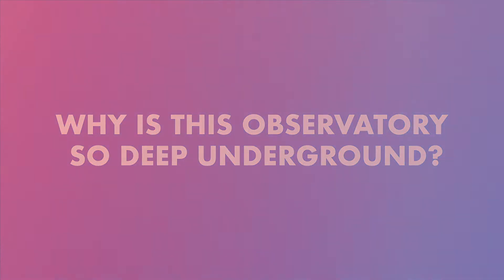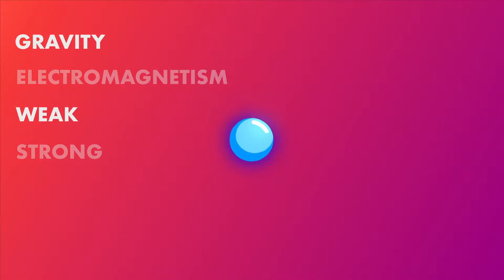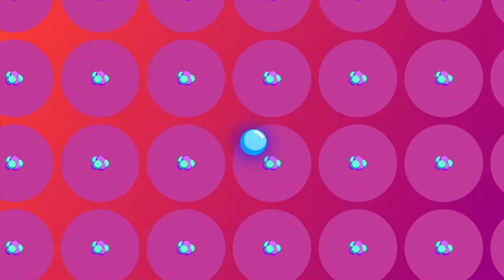What scientists are looking for are ghost-like particles called neutrinos. These subatomic particles are quite different from the ordinary matter making up the world around us because they only respond to two of the four forces in nature, passing straight through normal matter.